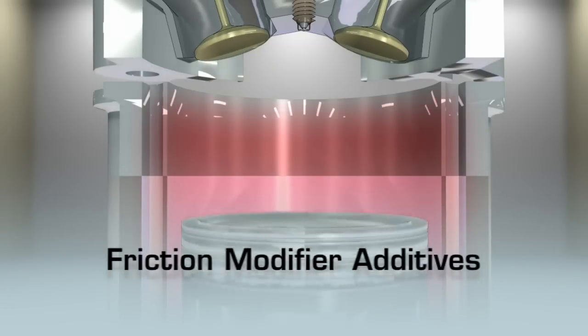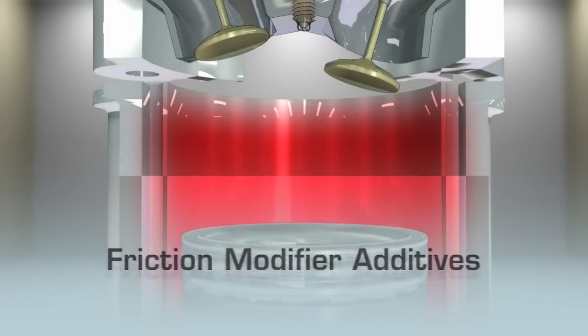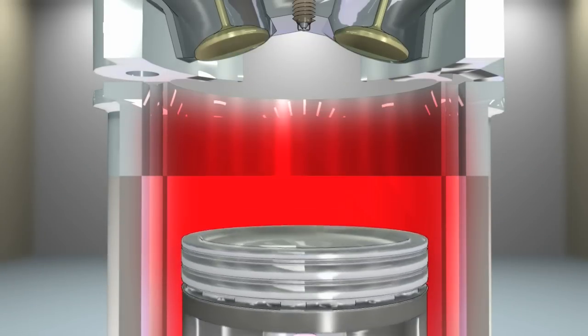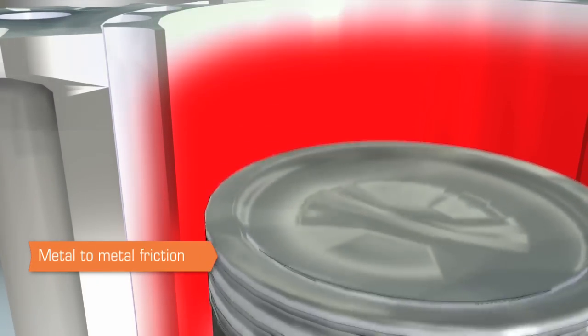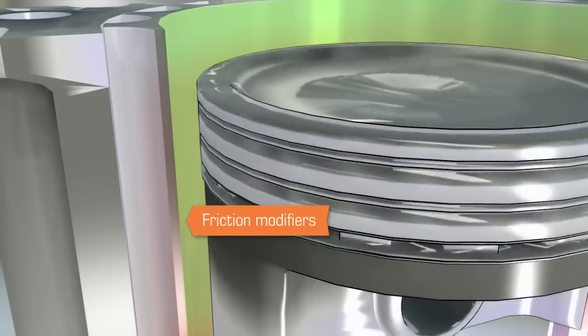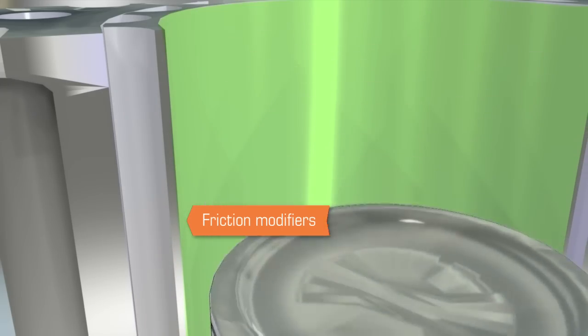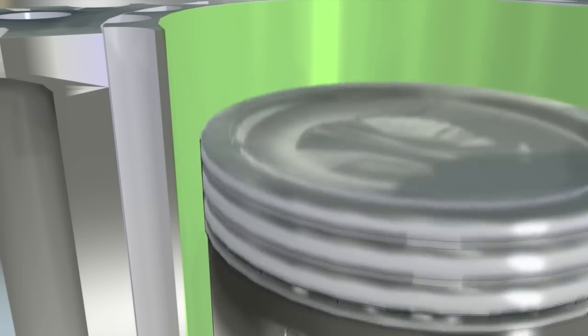Friction modifiers are yet another type of additive at work in an engine. They reduce the energy that can be lost during the four-stroke process through metal-to-metal friction of moving parts. Friction modifiers in gasoline can provide significant improvements to fuel economy as well as reduce engine wear.